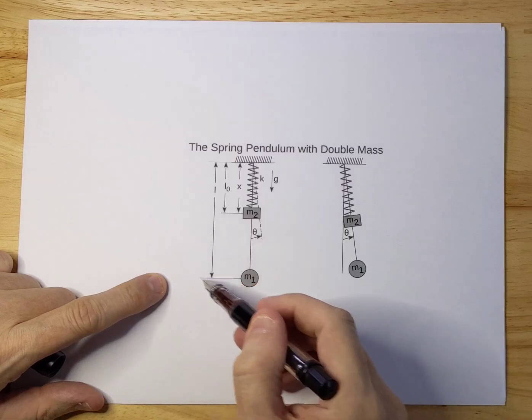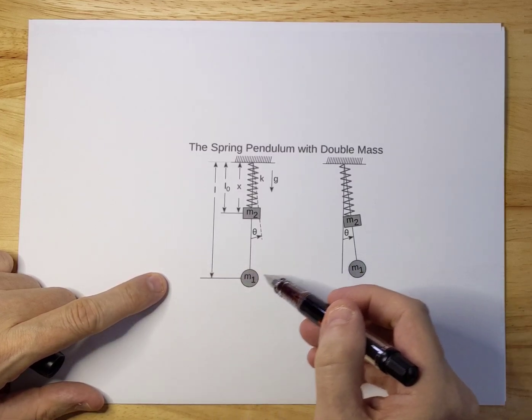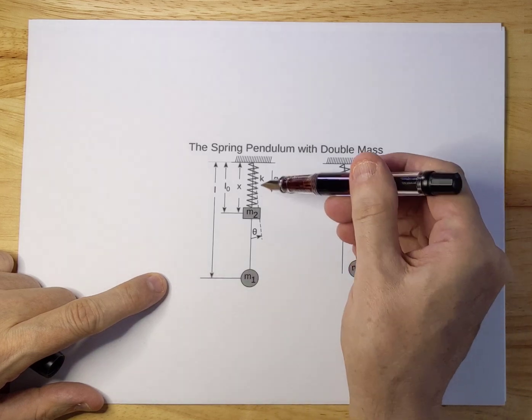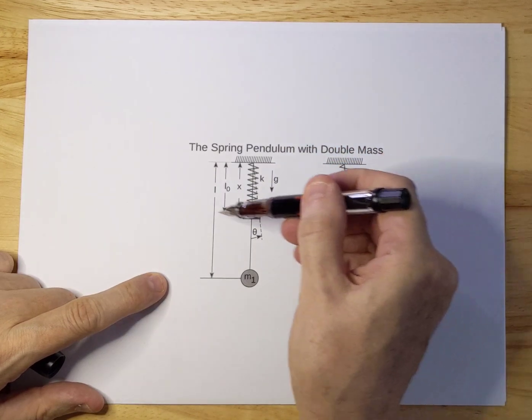The pendulum can go left and right in a flat plane type of fashion and M2 can go up and down and then obviously also left and right.